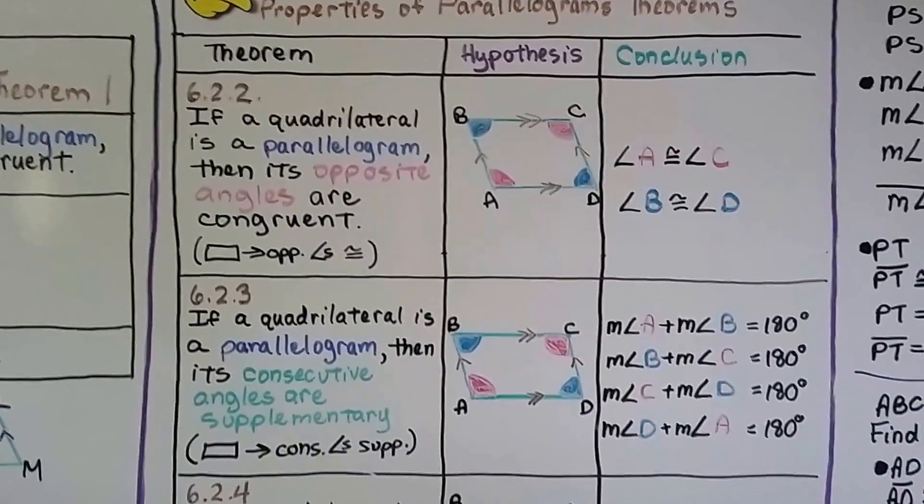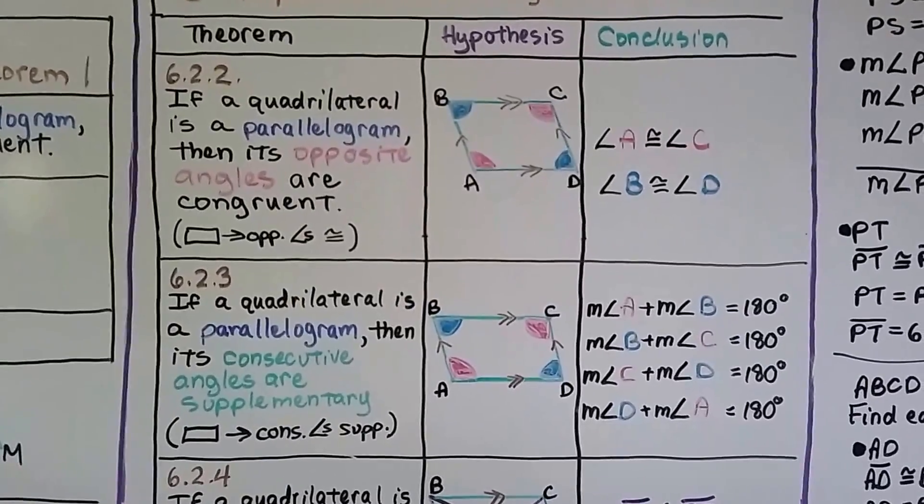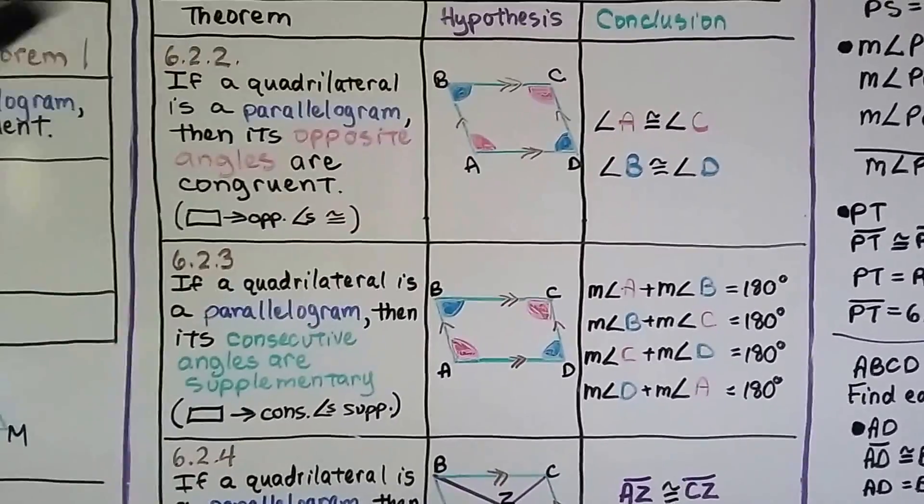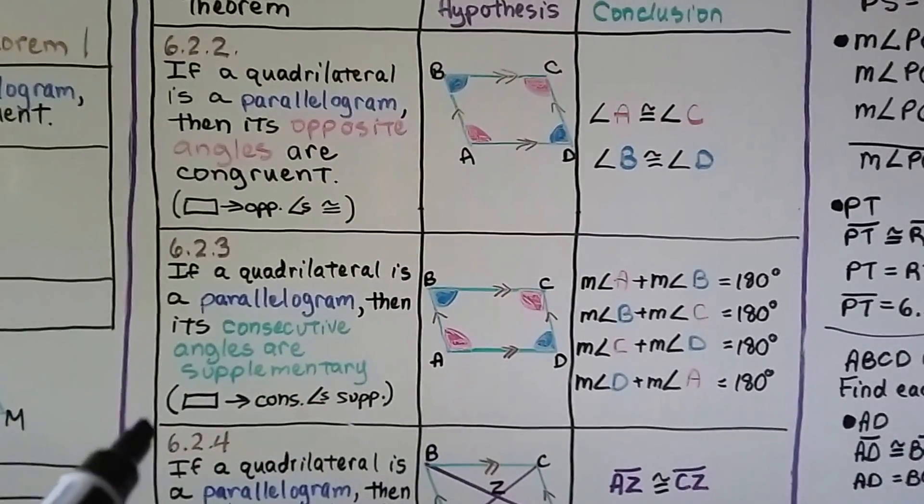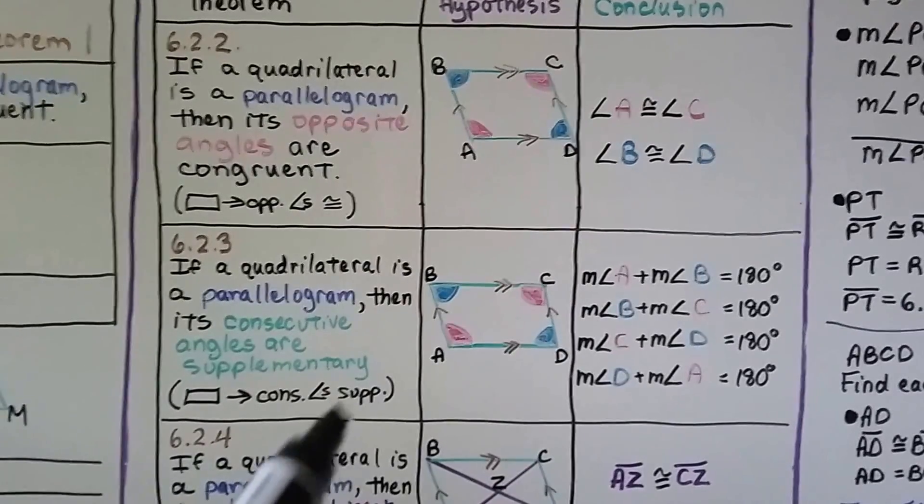Number three says if a quadrilateral is a parallelogram, then its consecutive angles are supplementary. That means A plus B will be 180, B plus C will be 180, C plus D will be 180, and D plus A will be 180. And we can write it in a proof like this with consecutive angles and supplementary.